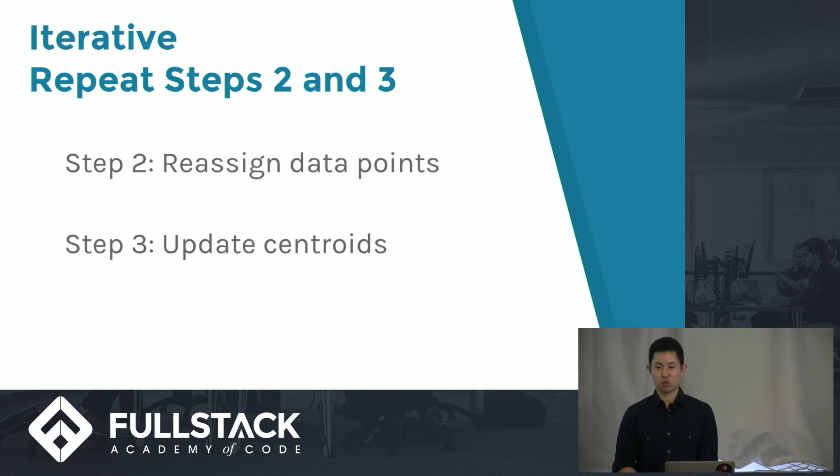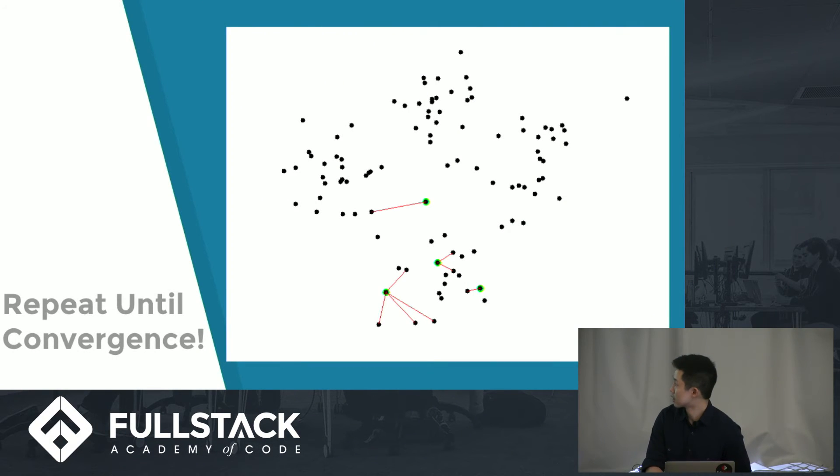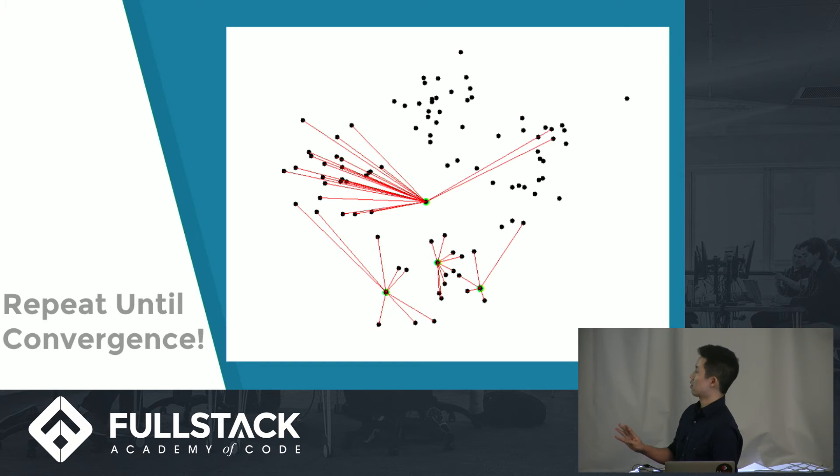My next slide will be an example of the algorithm being applied to a dataset. Hopefully, that will clarify the iterative process. Right here, you can see that the K number of clusters here are four. Four points were chosen initially at random.